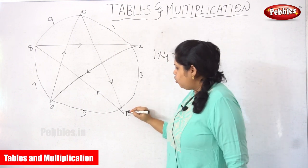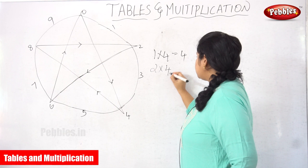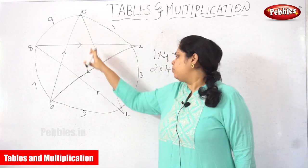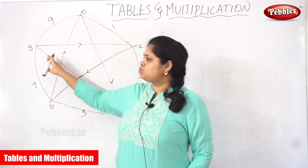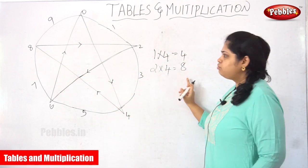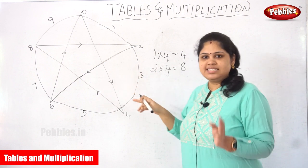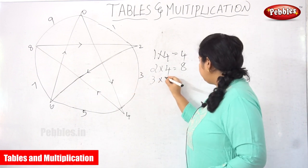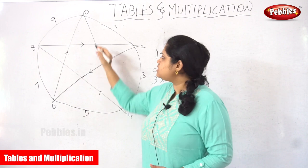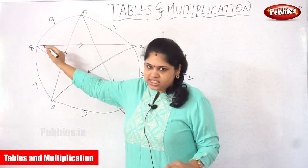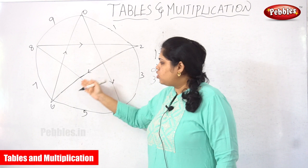The next arrow mark goes to number 8, so 2 × 4 = 8. Next it moves to 2 — but that represents 12 — so 3 × 4 = 12. See here: this is 1, this is 2, this is 3, so 3 × 4 = 12. Next the arrow mark goes to number 6, so 4 × 4 = 16.